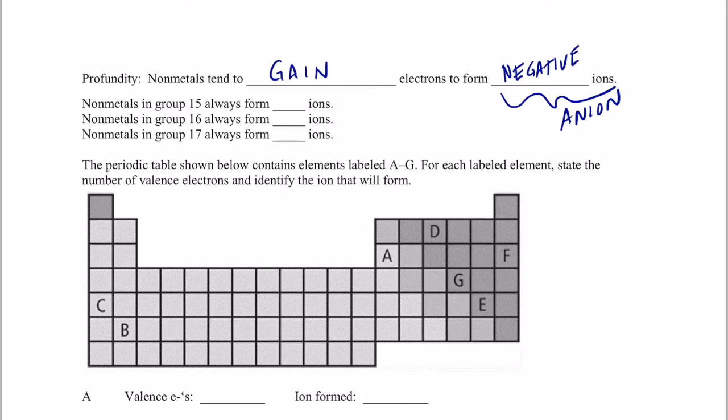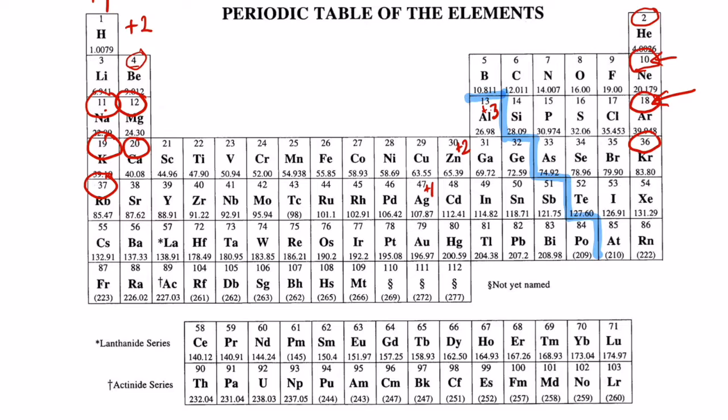Now, non-metals in group 15 always form three negative ions. Let me show you why. Group 15 is way over here on the periodic table. It's the nitrogen family. Nitrogen has seven electrons. Isn't it three away from having an electron configuration like neon? So it would gain three electrons and become three negative. Phosphorus has 15 electrons. Isn't it also three away from having a configuration like argon? Arsenic has 33 electrons. Isn't it also three electrons away? So members of group 15 form a three negative charge ion.